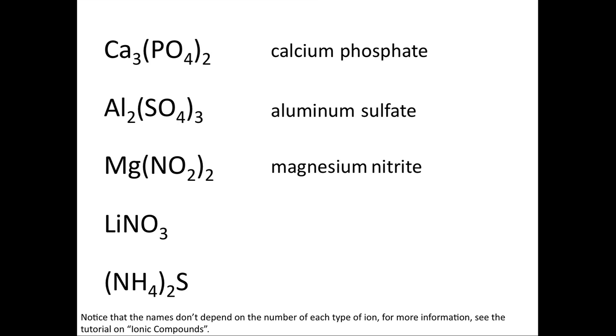That brings us to our next example. We have lithium because it's a monatomic cation and then the group NO3 which is nitrate, so lithium nitrate.